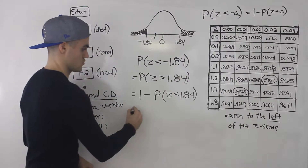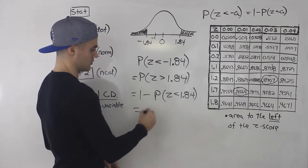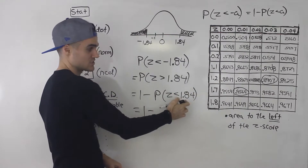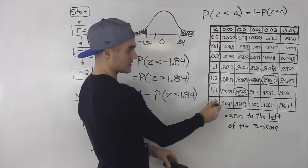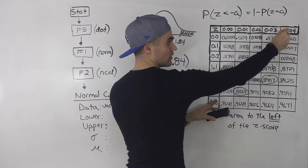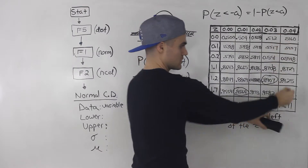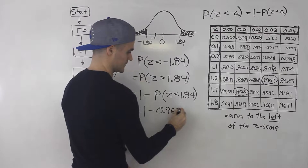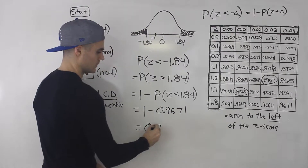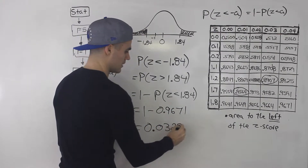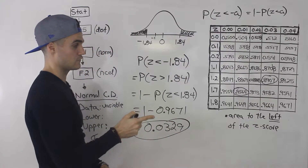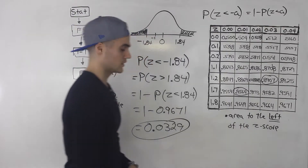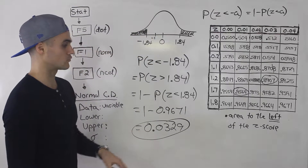Now from here we can use the table, since we have a positive z-score and we need the area to the left. We look up 1.8 with a second decimal place of 4, and we get 0.9671. Doing 1 minus 0.9671, you end up getting 0.0329 — the exact same number as before. If you're allowed to use the negative z-table and look up negative 1.84 directly, you would get that number right away.